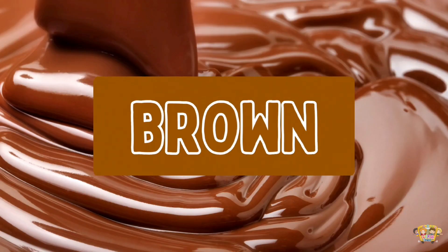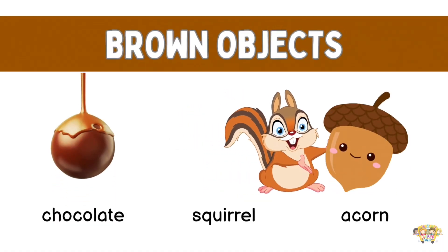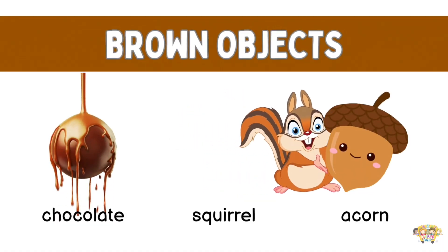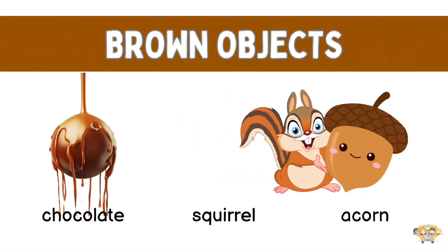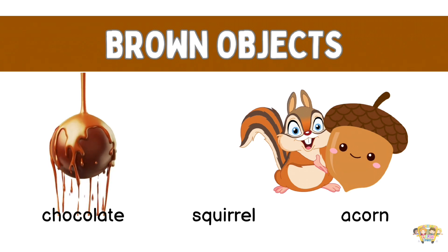Next, we have the color brown. Objects that are brown are our favorite chocolate, squirrel and acorn.